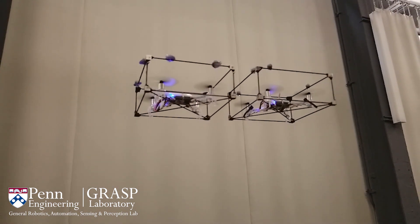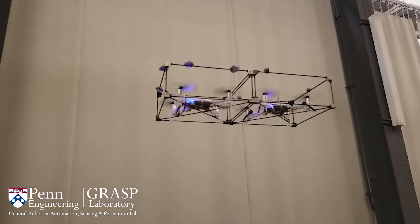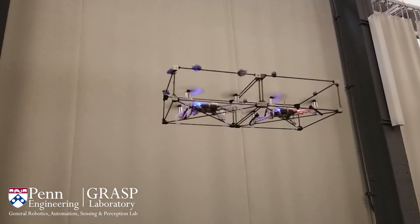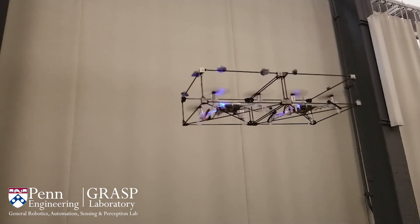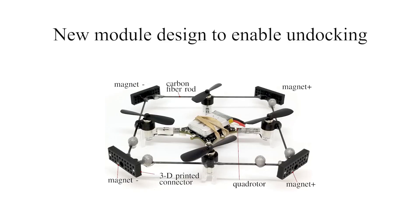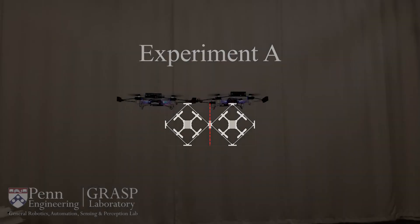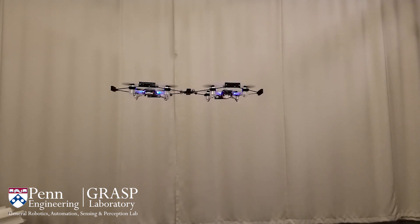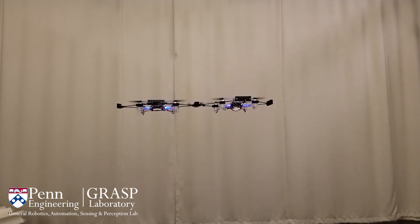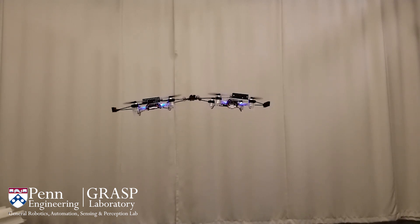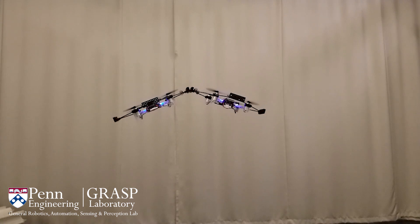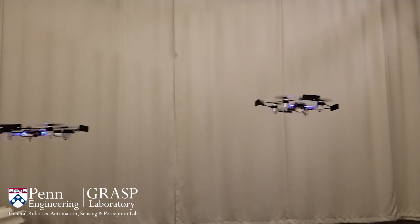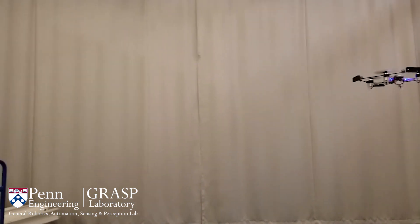The module-to-module connection was very strong, and once the modules were connected, they were not able to self-disassemble. We extend our previous design to include the undocking capability. Our design does not require active components for the module-to-module connection. Using our passive mechanism and a control strategy, a rectangular structure can be divided into two substructures during flight.